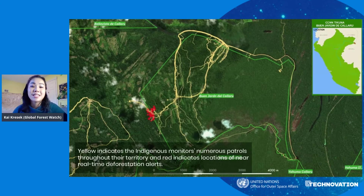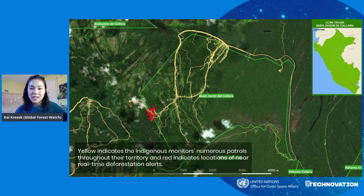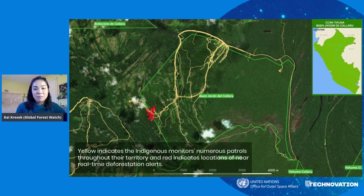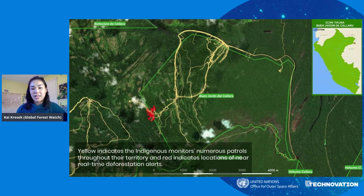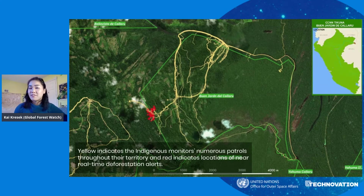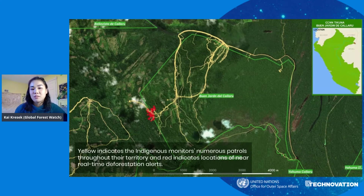Now I want to go into a specific example of how Global Forest Watch has been used to combat illegal deforestation. The map shown here is the Buenjardin community, where Global Forest Watch was used by the Takuna people to monitor their land. The community secured their collective land title in 2001, which legally protects the rights to the land. However, this title alone can't defend their land against trespassers like illegal loggers and coca producers. Local community monitors use smartphones with the Forest Watcher application to uncover illegal deforestation in the remote territory located in the Peruvian Amazon.